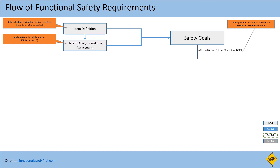Next, safety goals. A safety goal is a top-level requirement to avoid or mitigate a hazard. Along with safety goals, we will be getting the ASIL level and FTTI values. The FTTI value is the fault tolerant time interval, which is the time span between the occurrence of a fault and the occurrence of a hazardous event at the ASIL level.